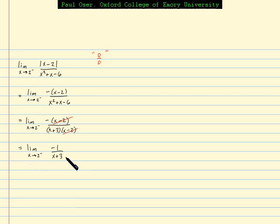Writing down what we have left, we are now free, because this is a continuous function at 2, to plug in and get negative 1 over 2 plus 3, or negative 1 fifth. So that's the value of the limit, negative 1 fifth.